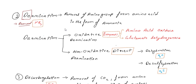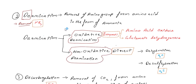In oxidative deamination, enzymes such as amino acid oxidase and glutamate dehydrogenase are involved. In non-oxidative deamination, the amino group is directly removed as ammonia. Associated reactions include dehydration, which is the removal of water, and desulfhydration, which is the removal of hydrogen sulfide (H₂S).